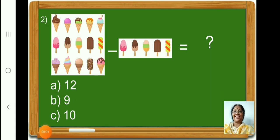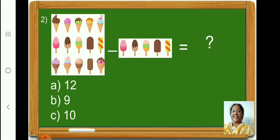Children, now count and see how many ice creams are there in the left hand side box. Yes, there are 15 ice creams. And how many ice creams are there on the right hand side box? 5. Therefore, 15 minus 5 is equal to 10. So children, let us put a tick for option C, 10.